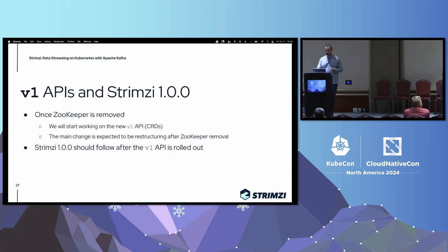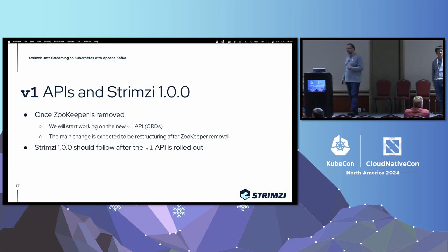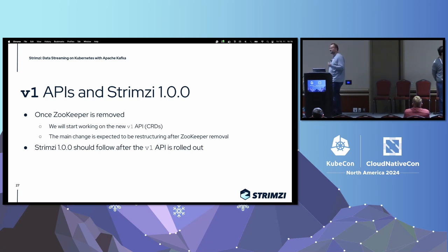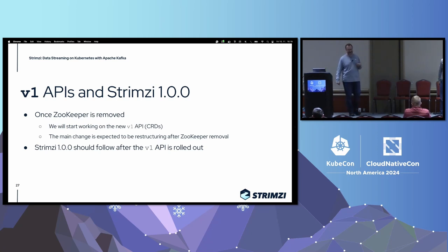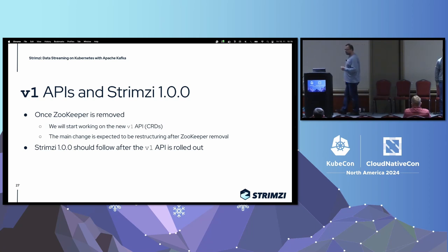Hopefully the finishing of the ZooKeeper removal will free our hands to work on some new features. One thing we definitely want to do after ZooKeeper is gone is create a new V1 of our CRD APIs without ZooKeeper. Once we manage that, we want to finally do the Strimzy 1.0 release. A long time ago — back in 2019 — we decided to wait for the 1.0 release until ZooKeeper was removed, and we didn't know how long that would take. But now hopefully it's coming to an end.